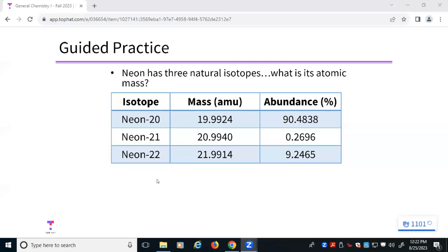Now, how do we go about that calculation? Well, the calculation itself is relatively simple. So I take the mass and I multiply it by the abundance. And then I add those values together. So this mass of neon-20, 19.9924, multiplied by the abundance, 90.4838%.